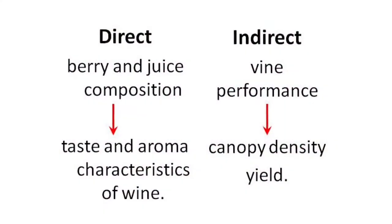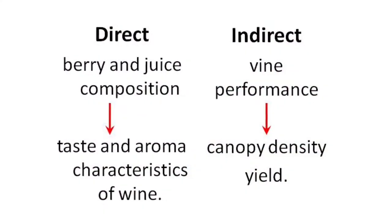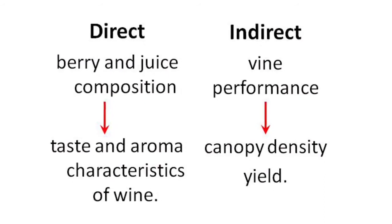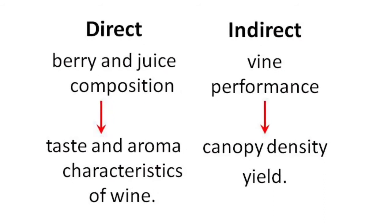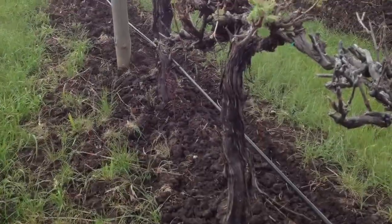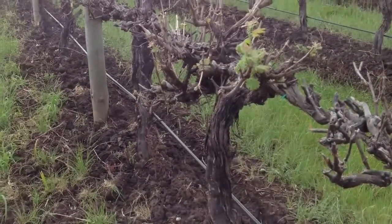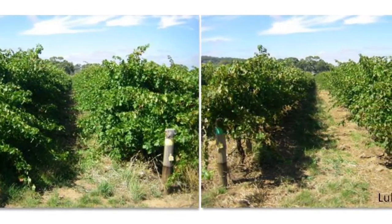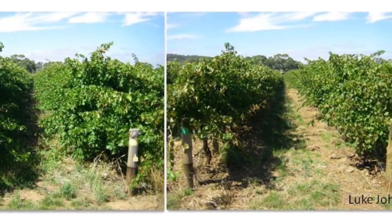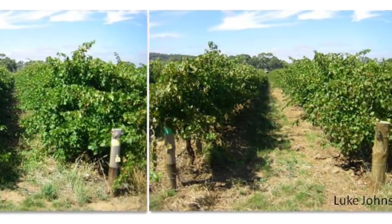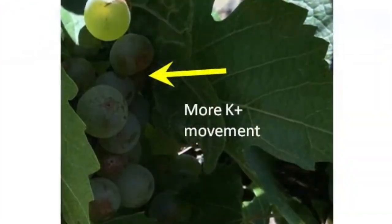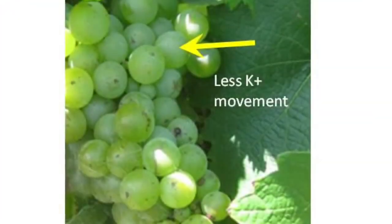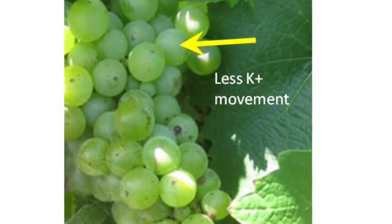There are two ways that potassium can accumulate in fruit — either directly or indirectly. Direct uptake occurs from the soil to the vines. On the other hand, indirect accumulation can occur as a result of changed canopy conditions. The leaves of a dense shaded canopy will move more potassium into berries compared to an exposed canopy.